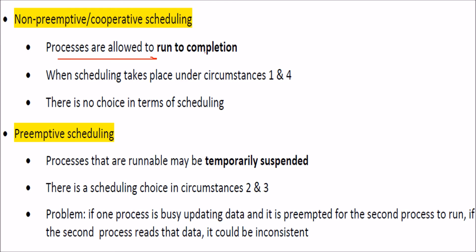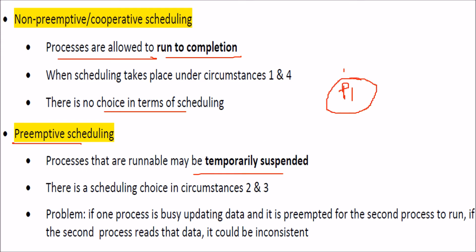There are two types of scheduling: non-preemptive (cooperative) and preemptive. In non-preemptive scheduling, a process is allowed to run to completion without being disturbed — there is no preemption. In preemptive scheduling, even if a process is currently running, it can be temporarily suspended and sent from the running state to a waiting state.